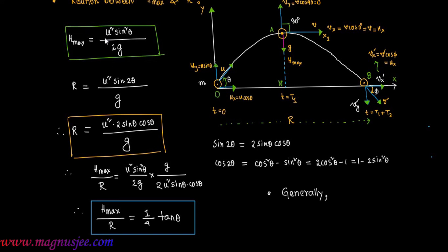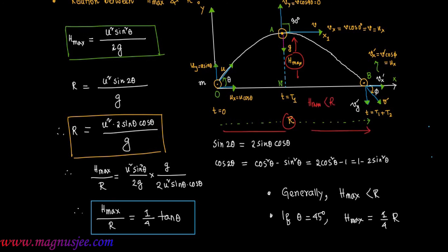Additional information: generally H max is less than R — maximum height is less than horizontal range. If theta equals 45 degrees, then H max = (1/4) R. If theta equals 75.96 degrees, then H max will be equal to R, meaning the maximum height attained by the projectile equals the horizontal range of the projectile.